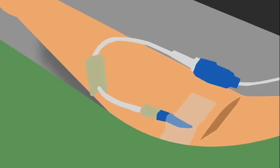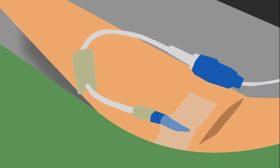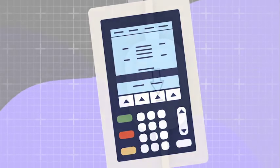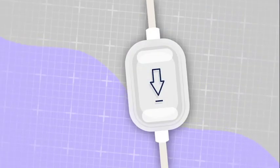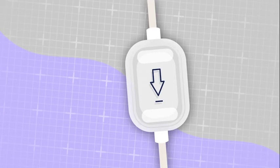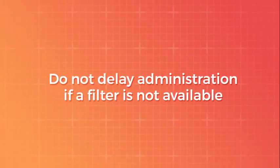Botulism antitoxin is recommended only for intravenous use. Use an IV line with a constant infusion pump and a sterile 15 micron or smaller inline filter. An illustration of an IV line inserted into the patient's arm appears on screen, followed by an IV infusion pump and an inline IV filter. Do not delay antitoxin administration if a filter is not available.